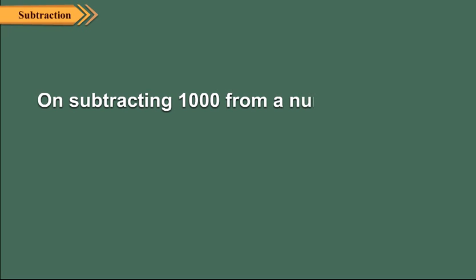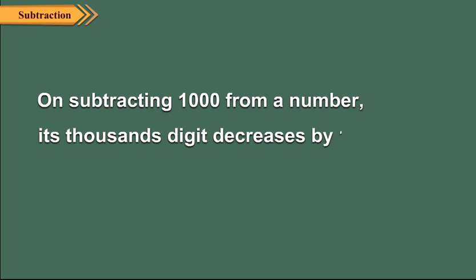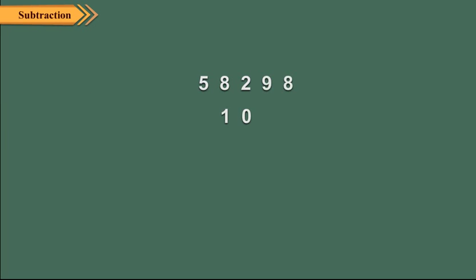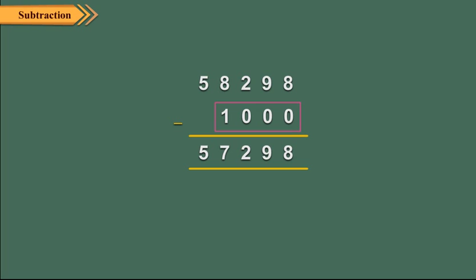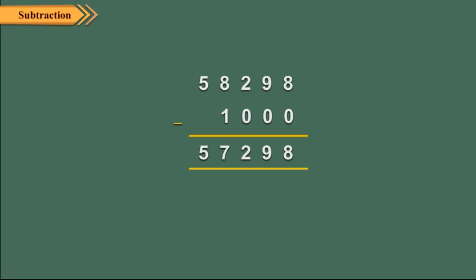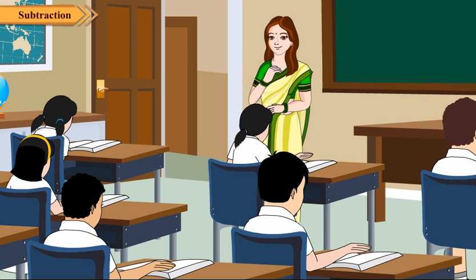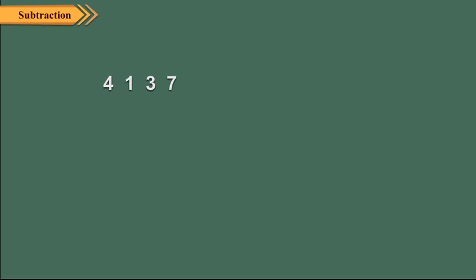On subtracting 1000 from a number, its thousands digit decreases by 1. For example, on subtracting 1000 from 58298, the thousands digit becomes 7. In the previous chapter, you have learnt how to estimate numbers. Let us apply that knowledge to estimate the sum and difference of numbers. Let us estimate the sum of 41372 and 28694 to the nearest thousands.